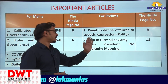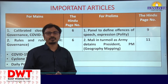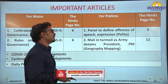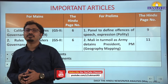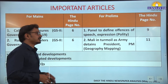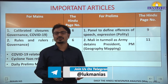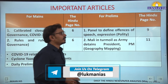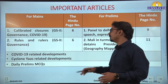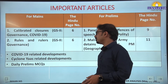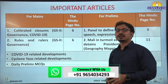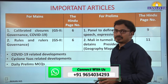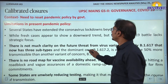Then, Mali in turmoil as the army detains the president and prime minister. A military coup happened last year, and now the president and prime minister have been dismissed by the head of the military junta. What is important for us is the location of Mali, some important features, rivers, and all these aspects from a geography mapping perspective. Also, daily COVID-19 and Cyclone Yas developments with prelims MCQs.